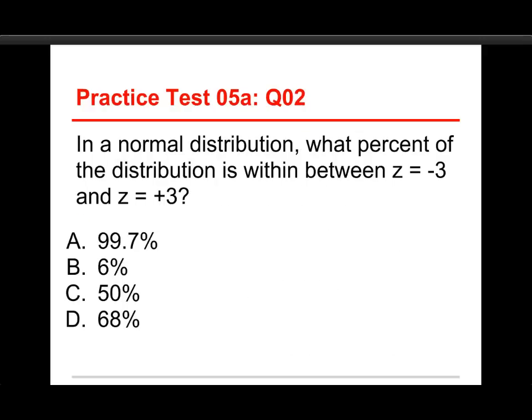Number two, in a normal distribution, what percent of the distribution is within between z = -3 and z = +3? The choices are 99.7%, 6%, 50%, or 68%.